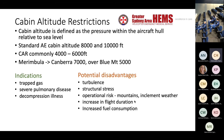Cabin altitude restrictions: as already mentioned, you may want to consider these for certain patients — for example, the risk of bends or decompression sickness. Standard aeromedical cabin altitude is around 8,000–10,000 feet. If you ask for a cabin altitude restriction on a longer range flight, you'll probably get 4,000–6,000 feet.